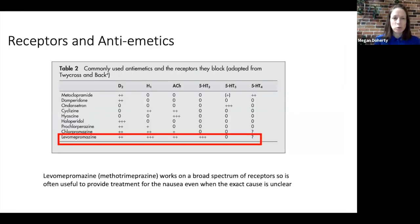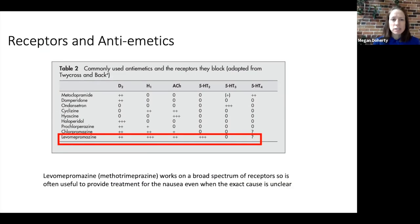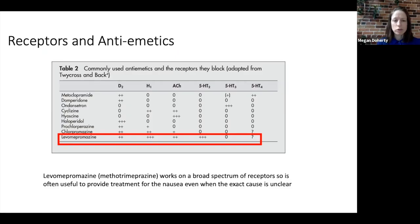This is a helpful table which shows some of the commonly used antiemetics and the receptors that they block. As you can see, some antiemetics have action on more than one type of receptor. Particularly, levomepromazine or methotrimeprazine is a broad-spectrum antiemetic, so it can be useful to provide treatment for nausea even when the exact cause is unclear.